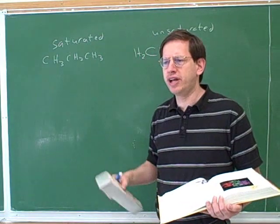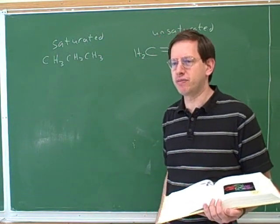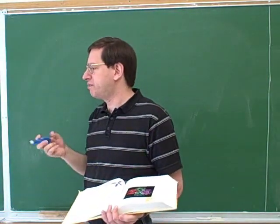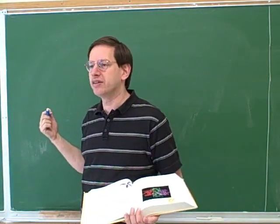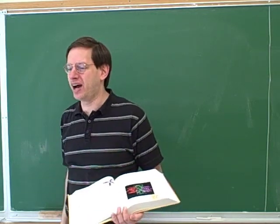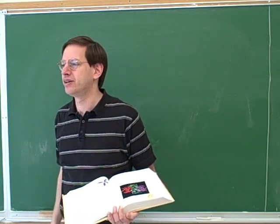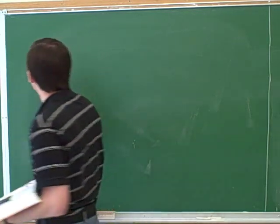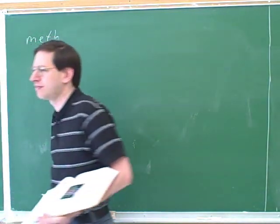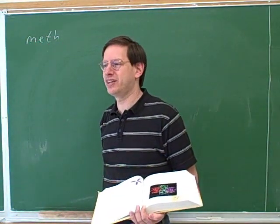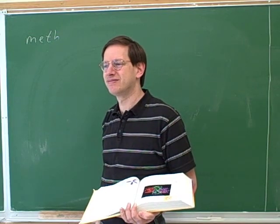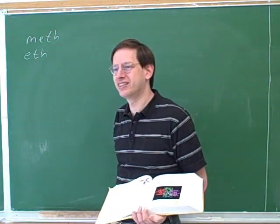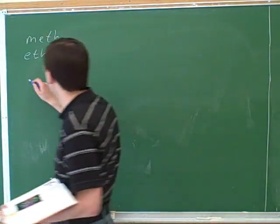All right, it looks like you're expected to do some simple nomenclature for organic chemistry. So for hydrocarbons, the first thing is basically it's a matter of counting how many carbons there are. For example, what's the root for one carbon? Methane? Yeah, so the root would be meth. And how about two carbons? Ethane. Good. Now let's keep going.